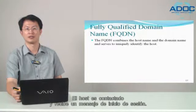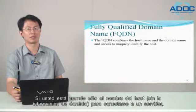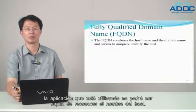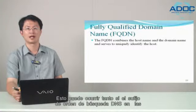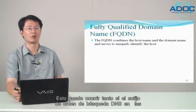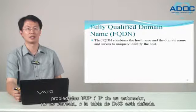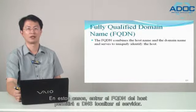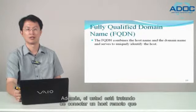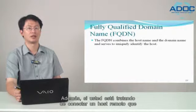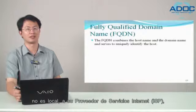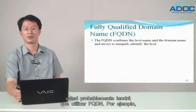The host is connected and you receive a login prompt. If you are using only the host name without the domain information to connect to a server, the application may not be able to resolve the host name. This can happen if either the DNS suffix search order in your computer's TCP/IP properties is incorrect, or the DNS table is corrupted. In these cases, entering the host's FQDN will allow DNS to locate the server. Also, if you are trying to connect to a remote host that is not local to your ISP, you will probably have to use the FQDN.